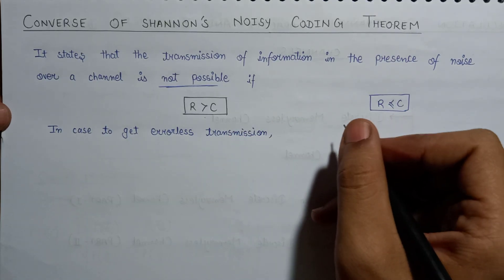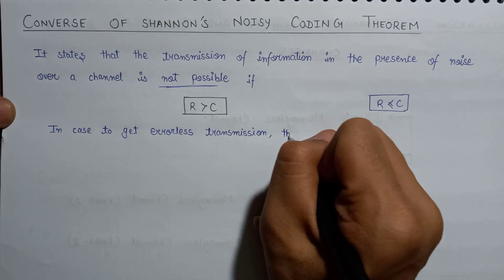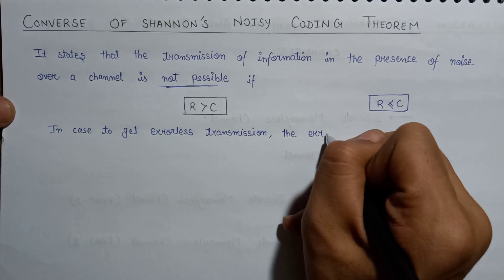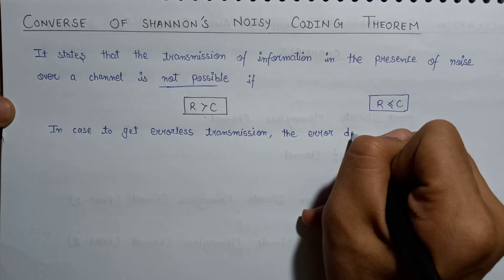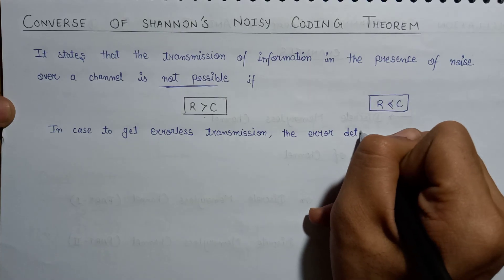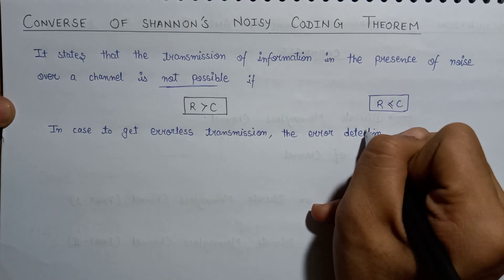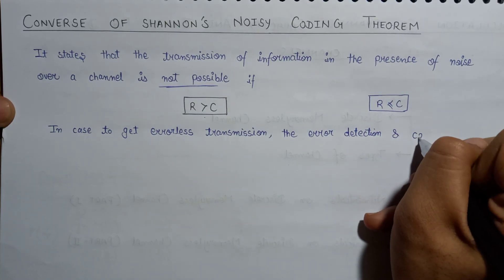Error detection and correction codes should be added to the original signal in order to achieve errorless transmission.